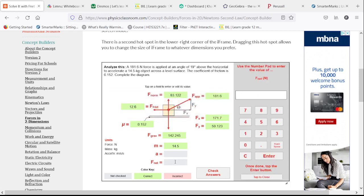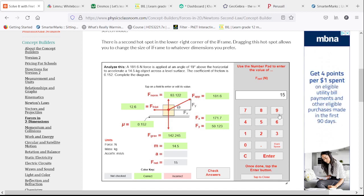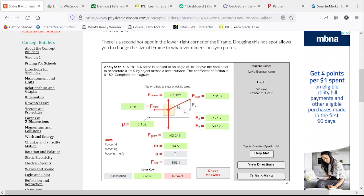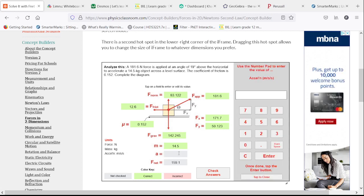All we have left is the net force. That will be our horizontal applied force minus our frictional force, which is 159.1. With that net force, we divide it by our mass and we get our acceleration of 10.97 meters per second squared.